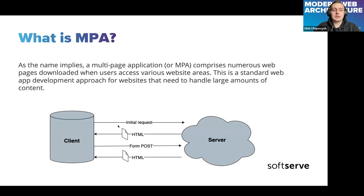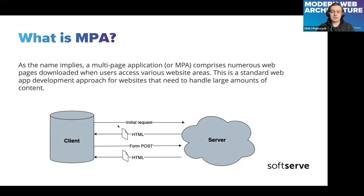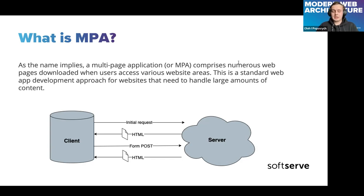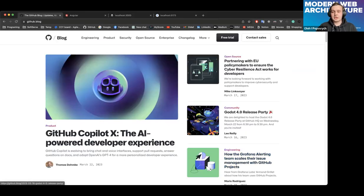Let's start from MPA. A multi-page application, as the name implies, comprises numerous web pages downloaded when users access various web areas. This is a standard web app development approach for websites that need to handle large amounts of content. As you may see in the diagram, for every request the server returns a new HTML page — specifically, the server provides all necessary resources: HTML, CSS, and JavaScript — for every new page when the user clicks links or submits responses. After each request we replace the entire application with a new one.